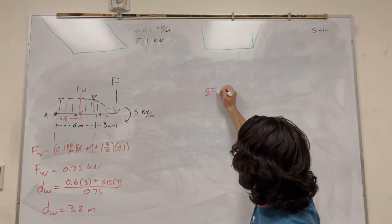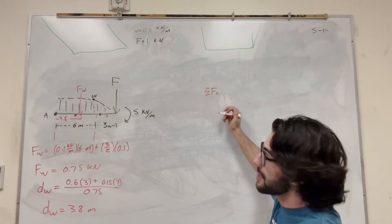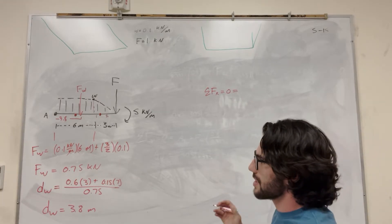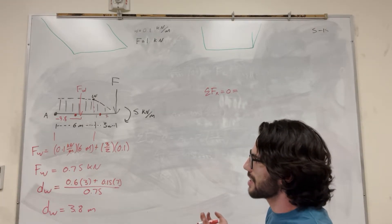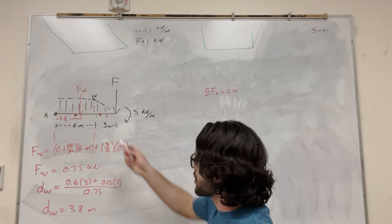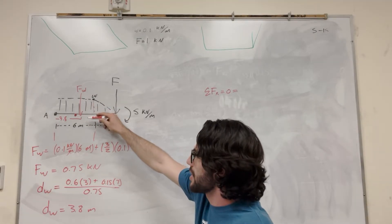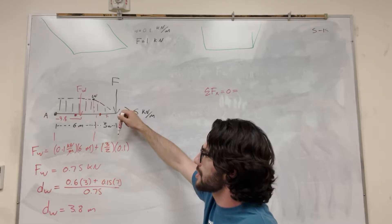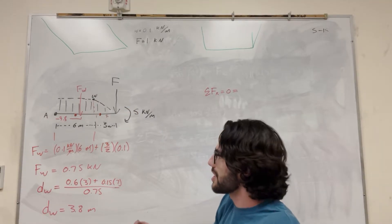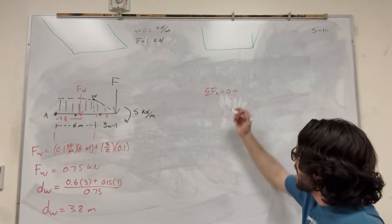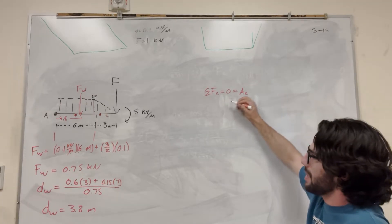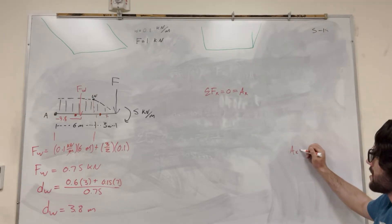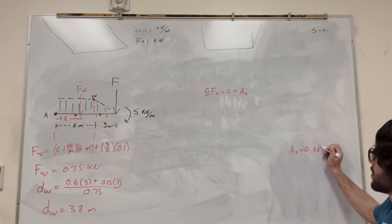Starting with the sum of forces in the x direction — it's equal to zero because the system is in equilibrium. This distributed force acts only downward, and the applied force also acts only downward, so there are no forces in the x direction. Therefore A_x must equal zero.